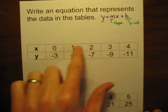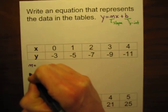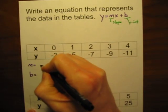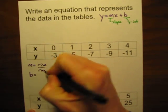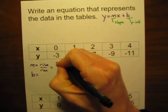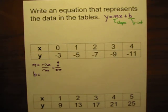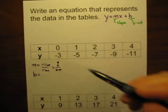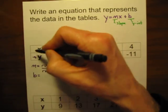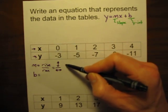Let's start with the first table. We've got the x's on top and the y's underneath. We want to find m, the slope, and b, the y-intercept. Remember, slope is rise over run — how much the line goes up and down versus left to right. The y values deal with up and down, and the x values deal with side to side, so we look at the change in y divided by the change in x.